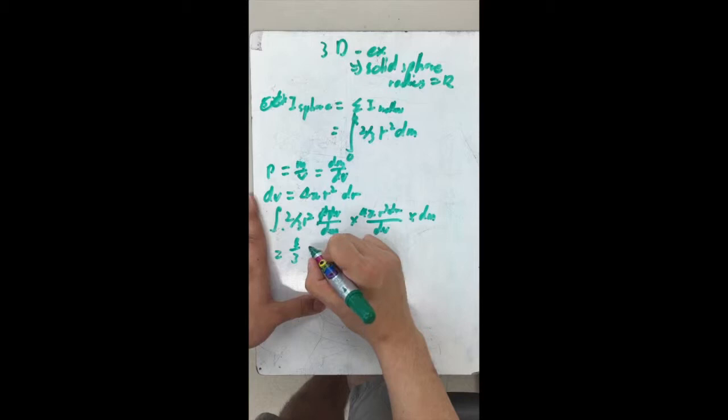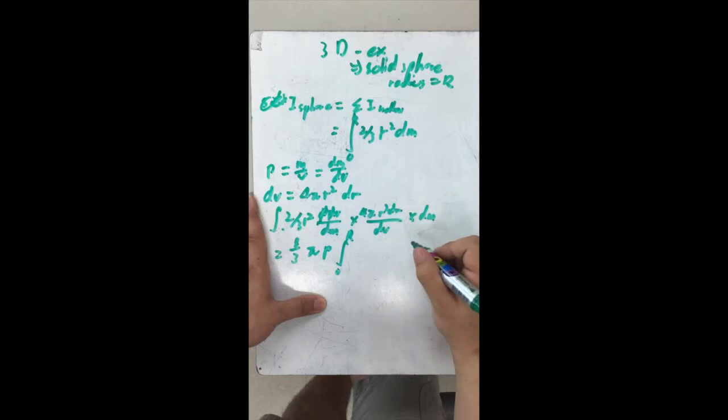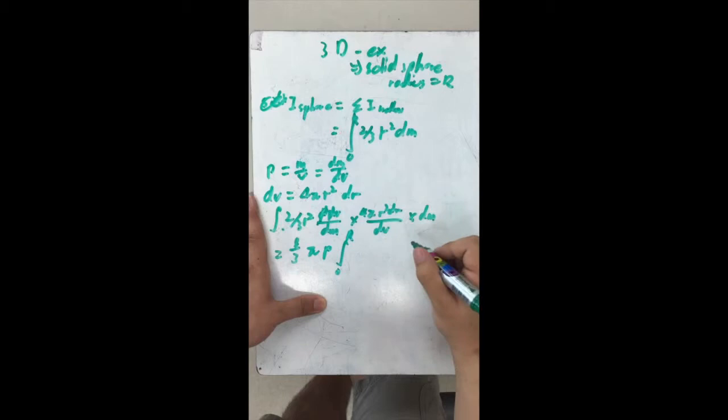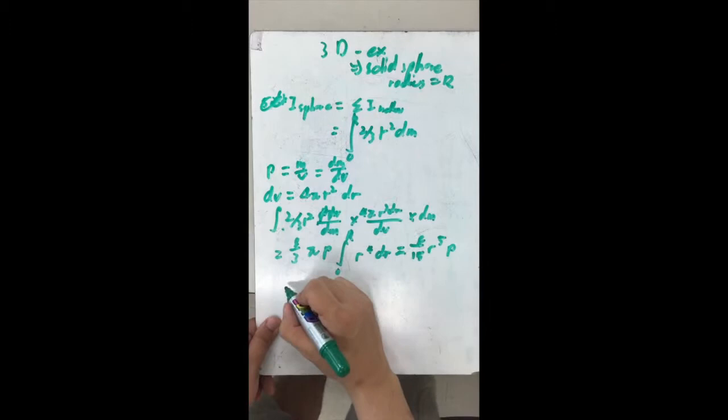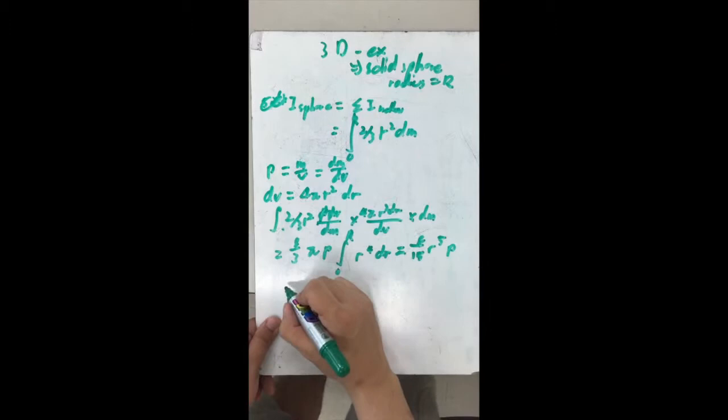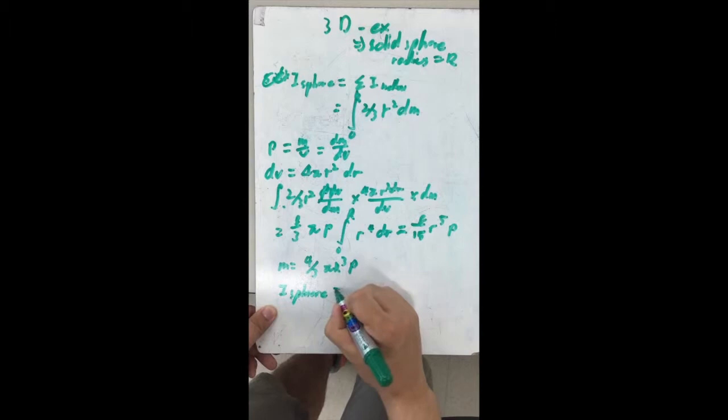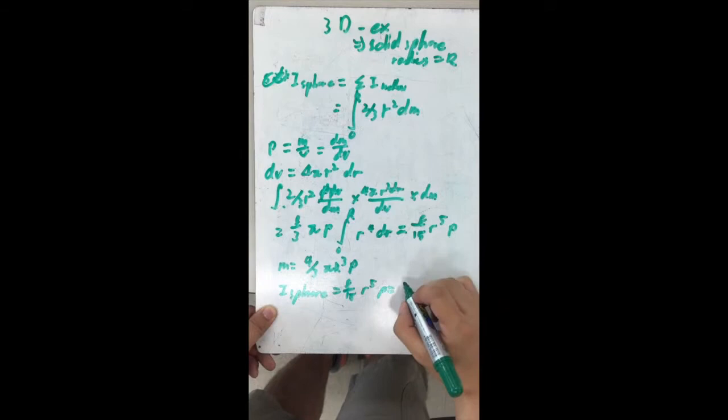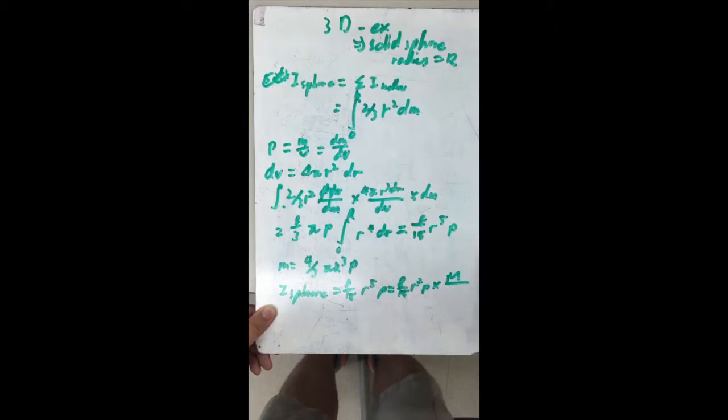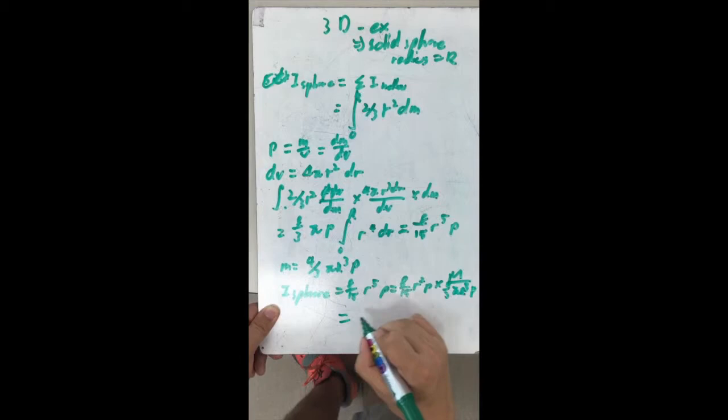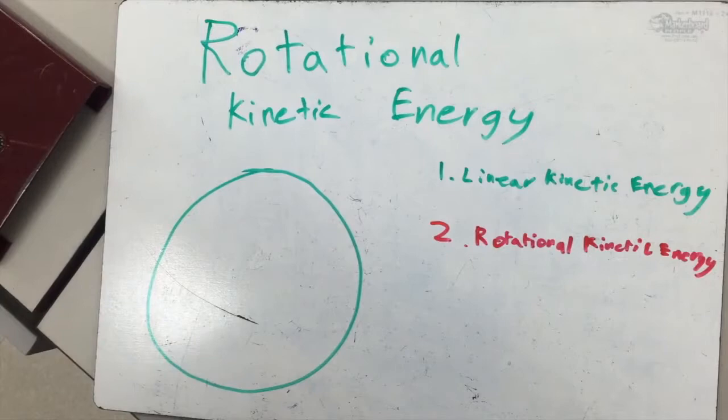When this equation is simplified, it equals 8/15 times density times the integral from 0 to capital R radius to the fourth, which is the equivalence of 8/15 r to the fifth power times density. To make the equation into a function of mass, we use the equation mass equals 4/3 π capital R to the third power times density. When this is all put together, the inertia of a sphere equals 8/15 capital R to the fifth power times density times mass over 4/3 π r to the third power times density. When this is all simplified, it becomes 2/5 mass times r squared.